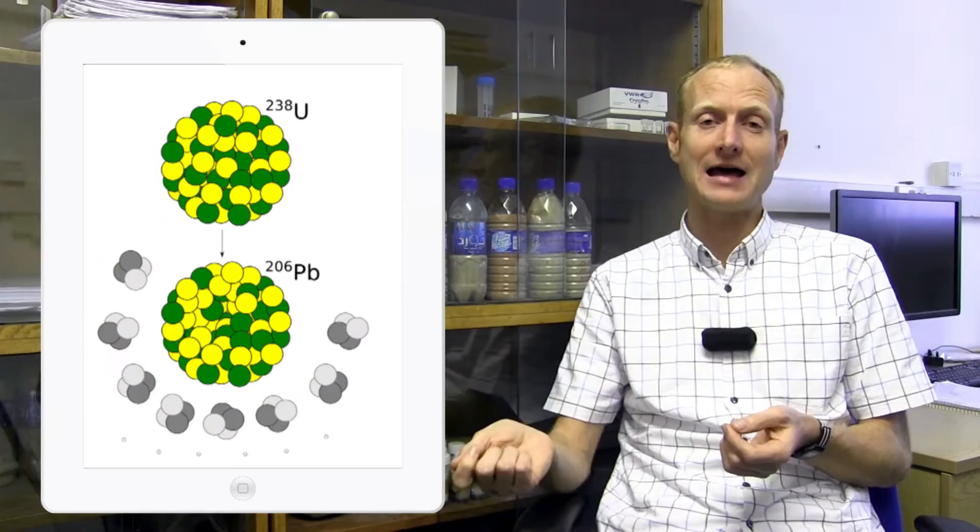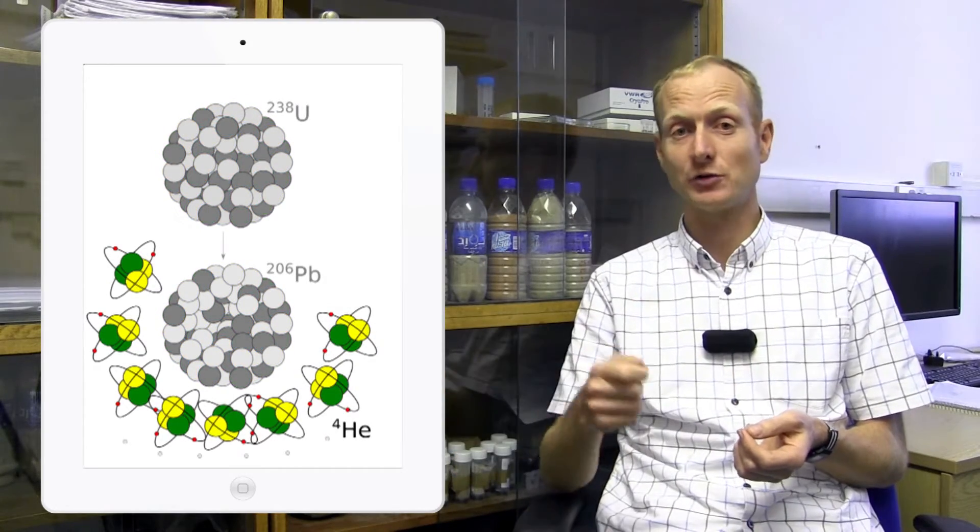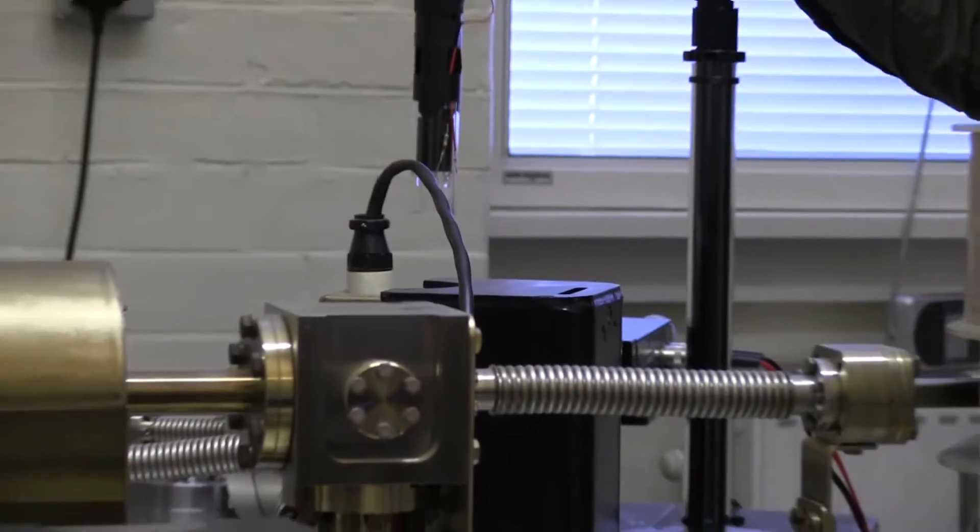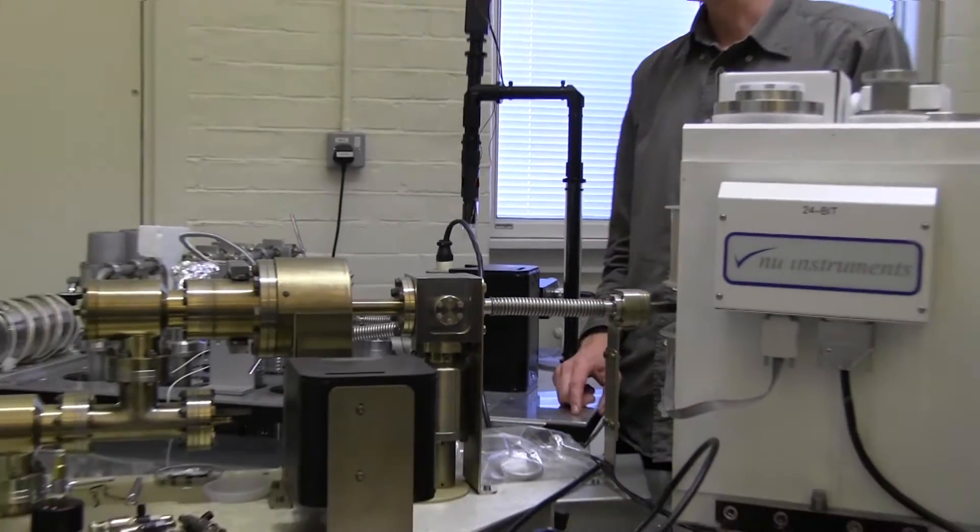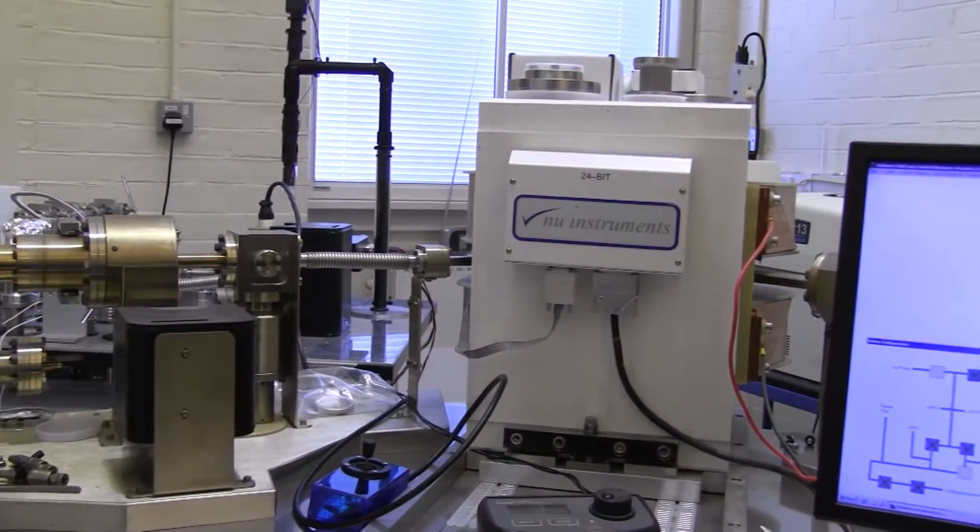We can measure the ratio of lead to uranium and of helium to uranium with an instrument called a mass spectrometer, and we've got three of those installed here at the London Geochronology Centre.